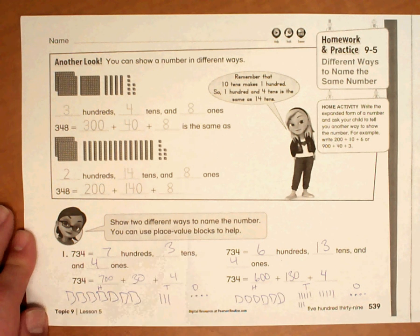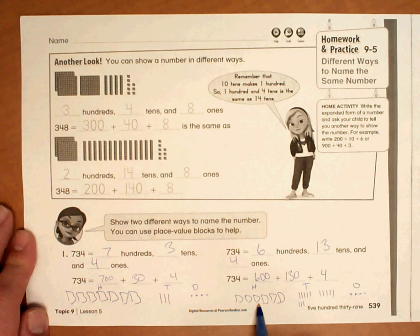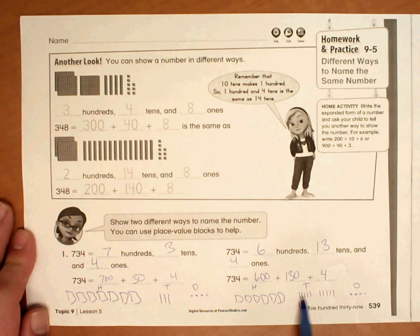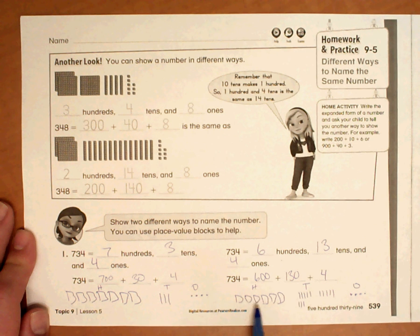But it's asking me for a second way, and what I did was I took one of these flats and exchanged it for ten rods. So instead of seven hundreds, I have six hundreds. Instead of three tens,